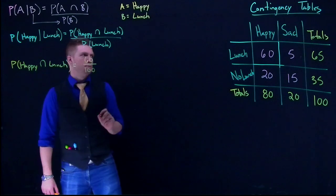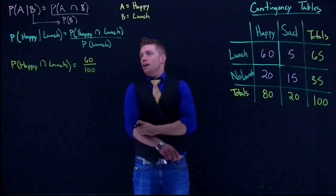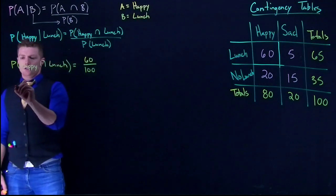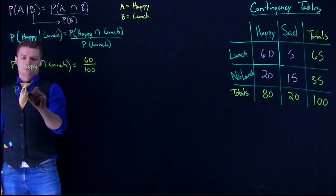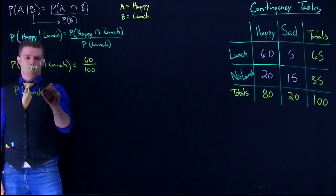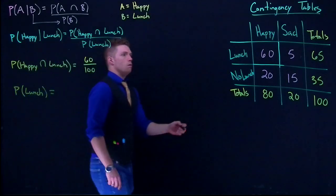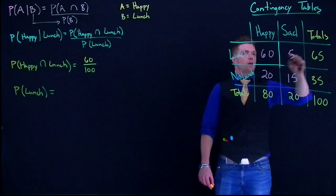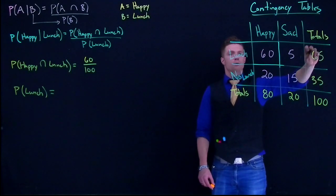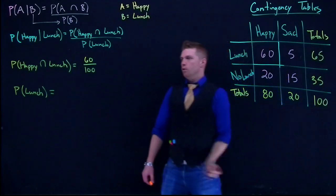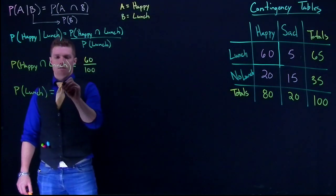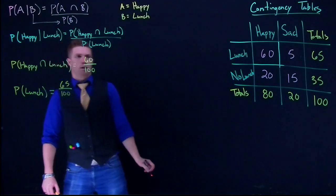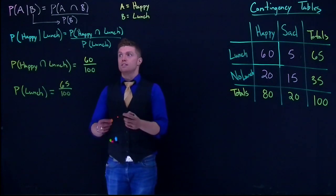Now we just need to figure out the probability of lunch. Looking at the table, there are a total of 65 people who said that they eat lunch out of the 100 in our sample space, so we've got 65 out of 100. We've got all the pieces that we need.